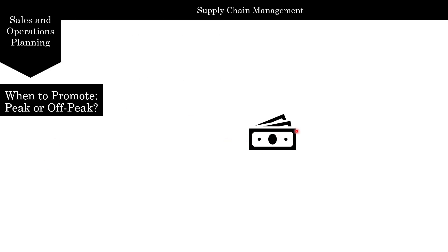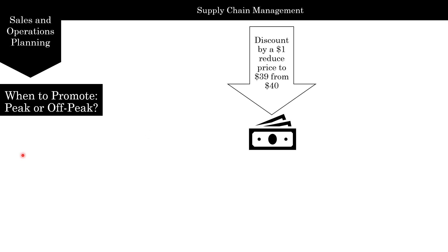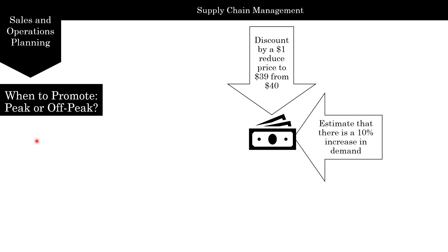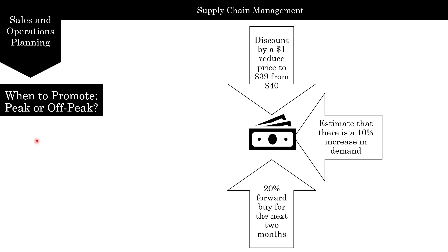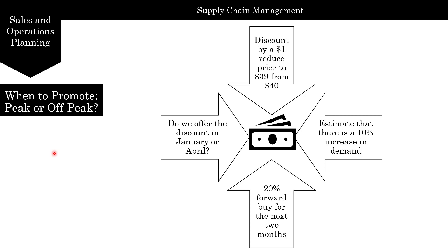The question is: when are you going to offer the promotion and how much? Let's assume a $1 discount reducing the price from $40 to $39. We'll also assume a 10% increase in demand and 20% forward buying for the next two months. These figures would be given to you or estimated when you're working on the problem. So should we offer the discount in January, the lowest demand period, or in April, the highest demand period? Let's go through this in Excel.